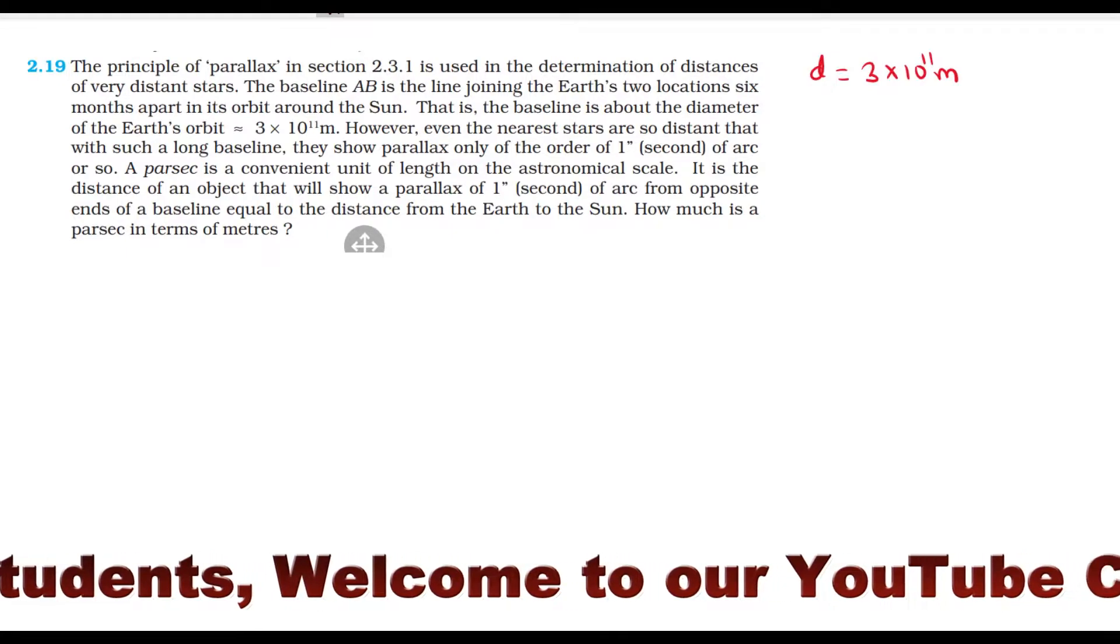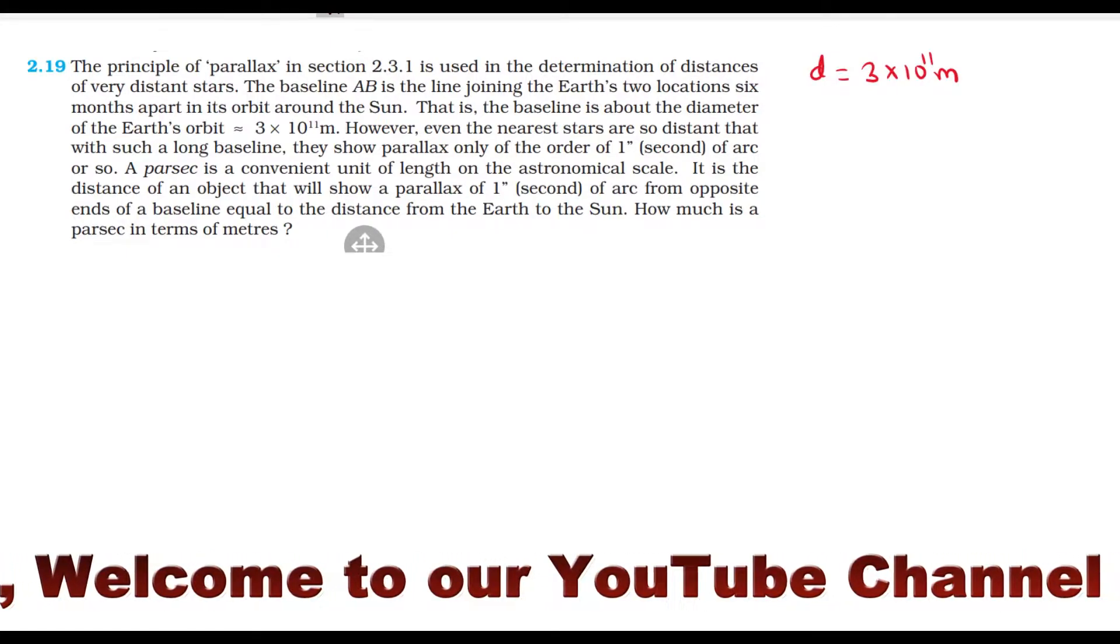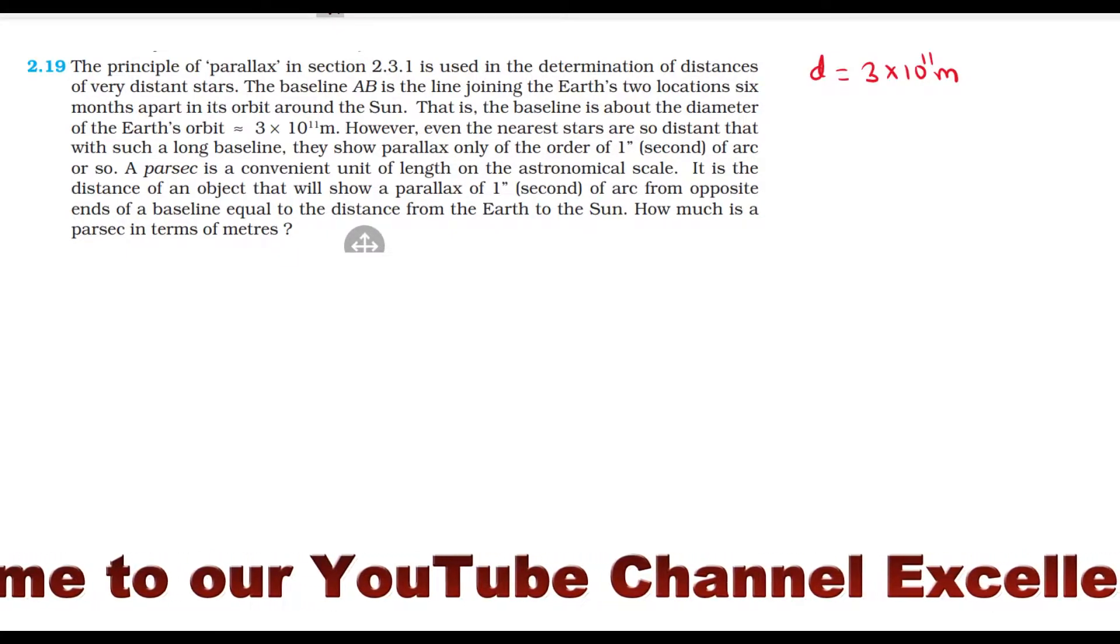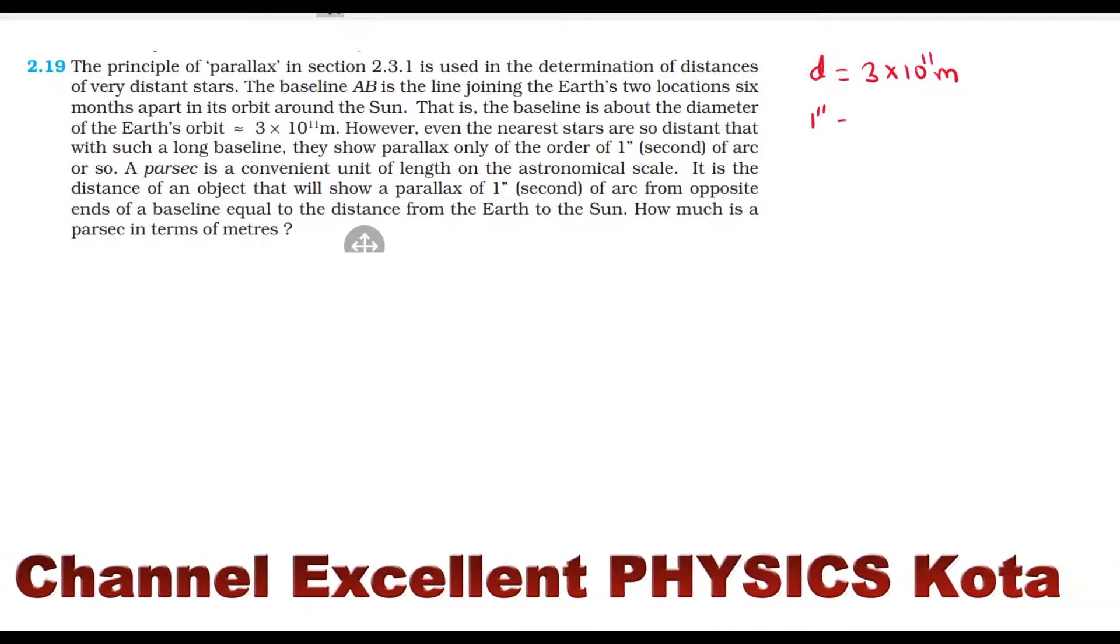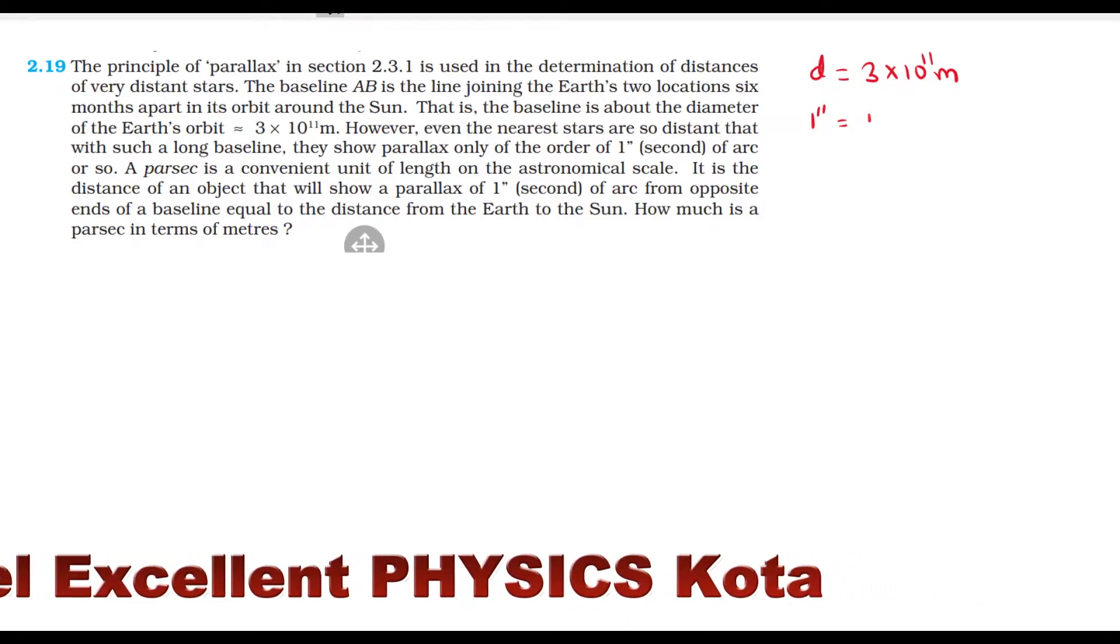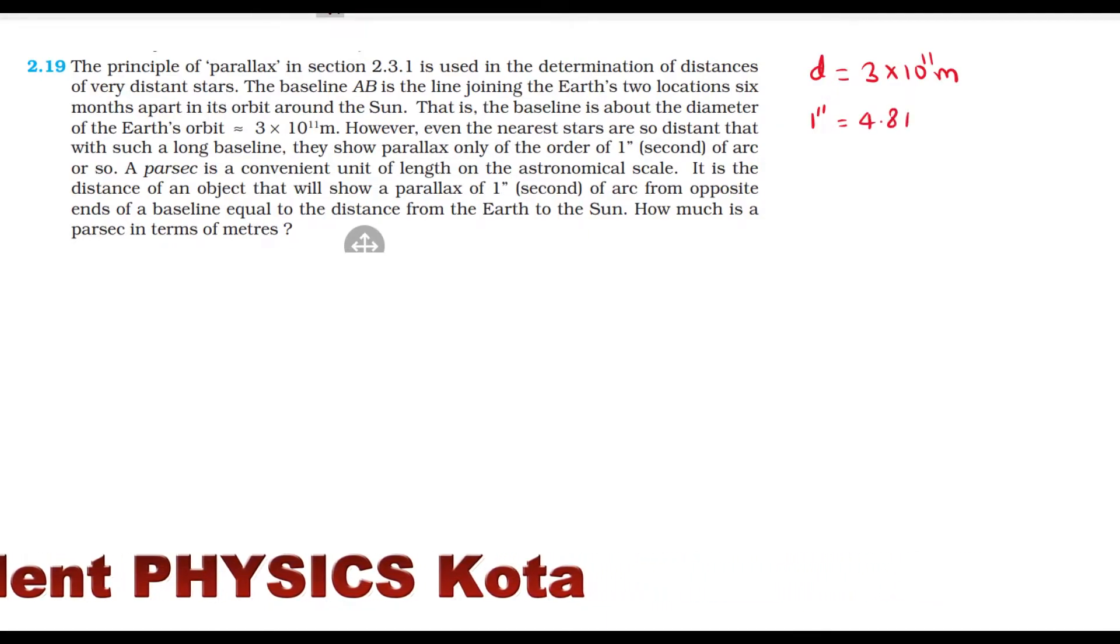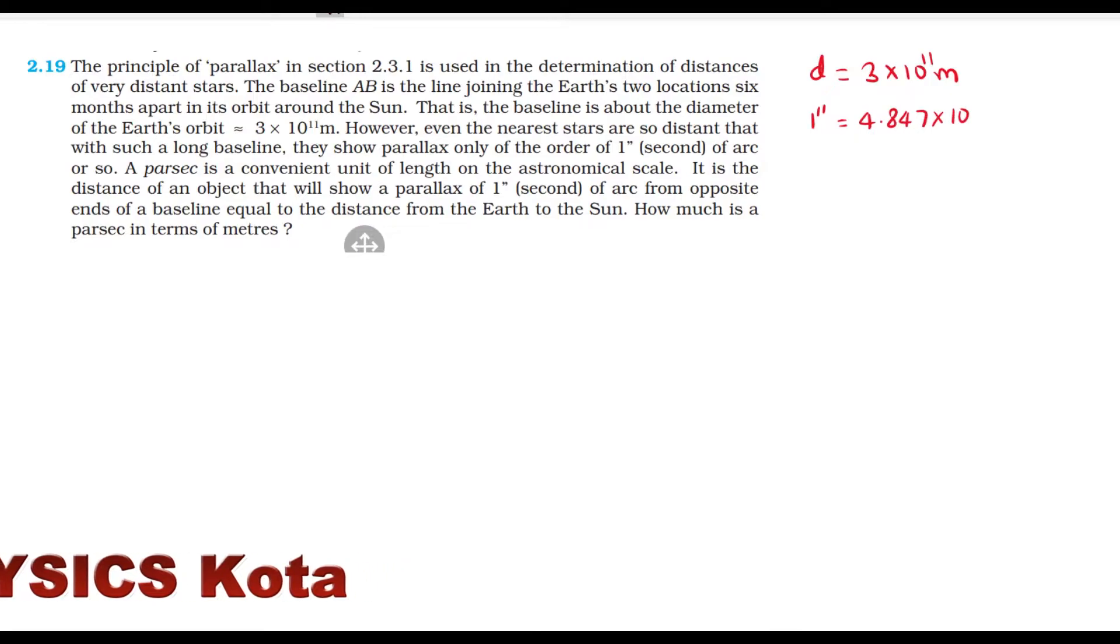However, even the nearest stars are so distant that with such a long baseline, they show parallax only of 1 second. So, 1 second के लिए हमने radian, जो angle radian में लिखा था, वो होता है 4.847 × 10^-6 radian हमारे पास value होती है.